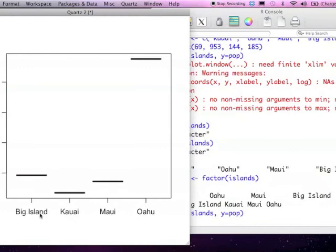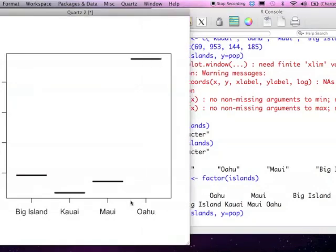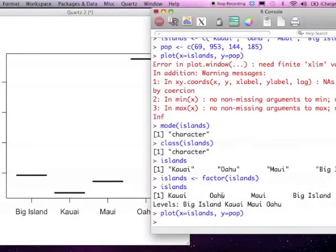Big Island's the youngest. Kauai's the oldest. It's not order of size or anything. The order that it's following is alphabetical. And it's pretty rare that your data will naturally have a natural order that's also alphabetical. So what you want to do is probably reorder your levels.